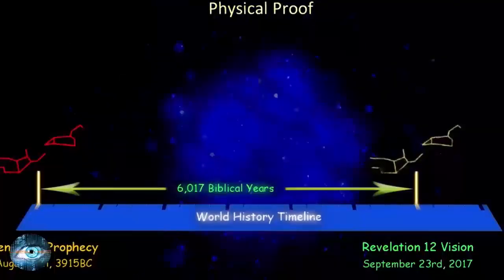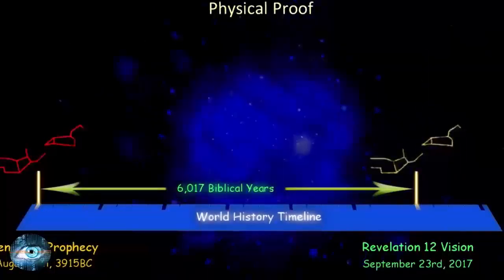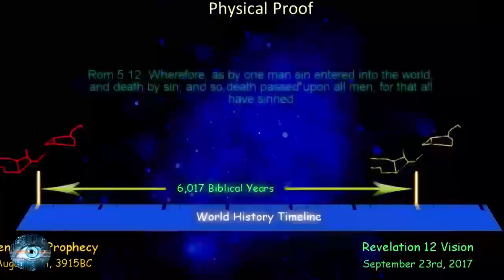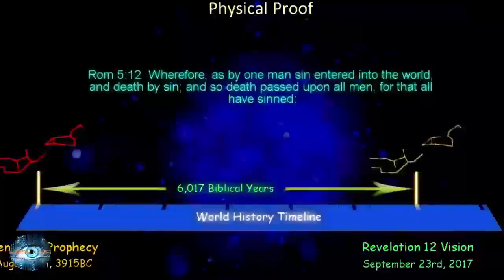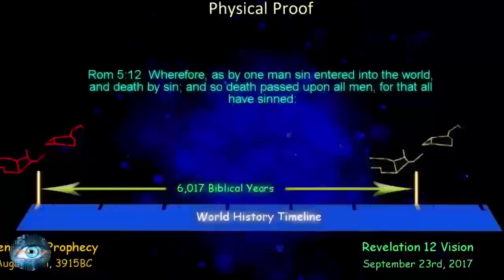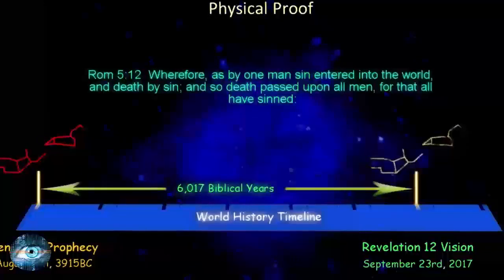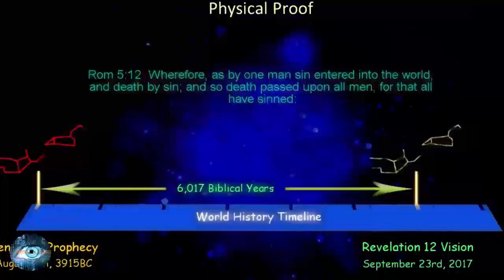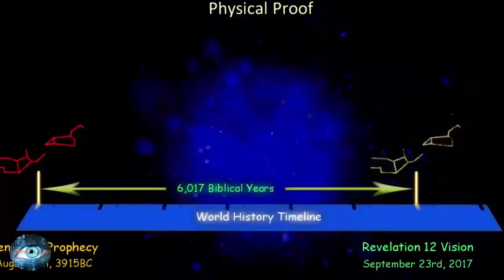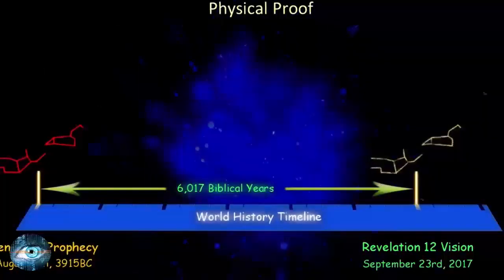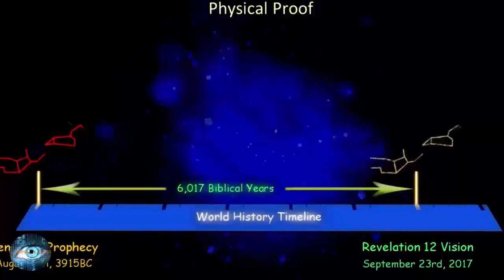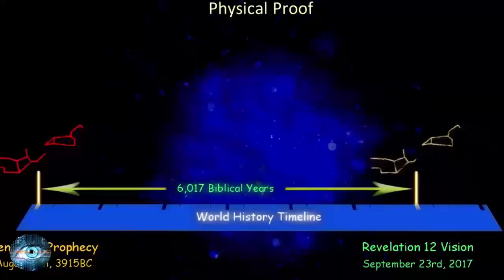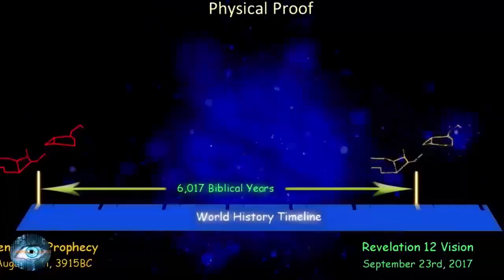We know that at the point that the prophecy was given, sin entered the world and death by sin, as seen in Romans 5. Romans 5 verse 12: Wherefore, as by one man sin entered into the world, and death by sin, and so death passed upon all men, for that all have sinned. Before this point there was no death, according to God's word. At this point Satan also gained control over the world and became the God of this world, as described in 2 Corinthians 4.